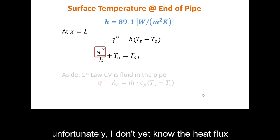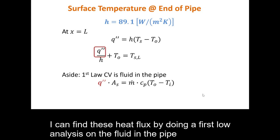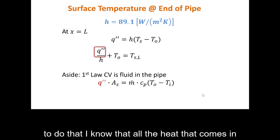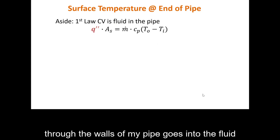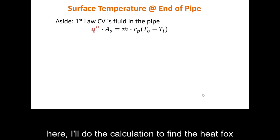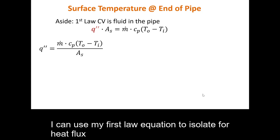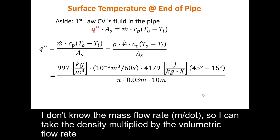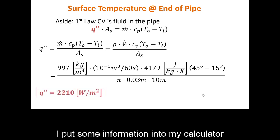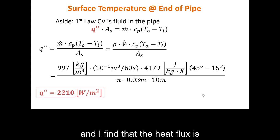I can find the heat flux by doing a first-law analysis on the fluid in the pipe: all the heat coming in through the walls goes into the fluid. Using the first-law equation and isolating for heat flux, I replace the mass flow rate m-dot with density times volumetric flow rate. Plugging in the numbers, I find that the heat flux is 2,210 W/m².